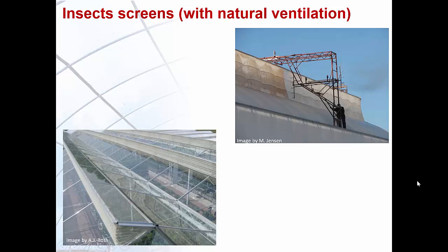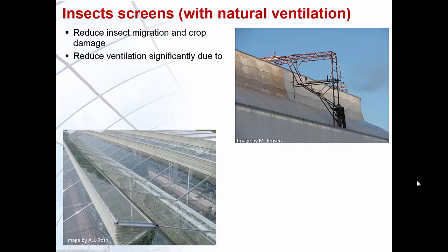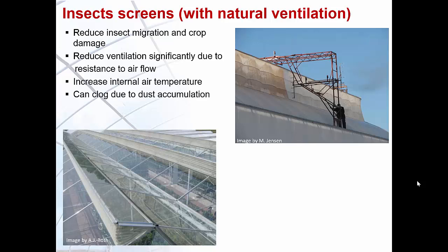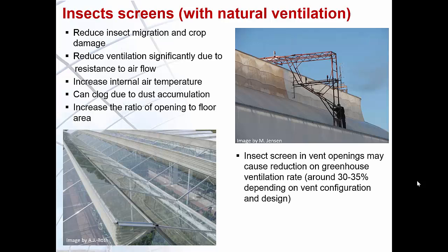Insect screens are commonly used with naturally ventilated greenhouses. They help reduce insect migration and crop damage. However, insect screens can significantly reduce ventilation due to resistance to airflow and also increase internal air temperatures. They can clog due to dust accumulation. Research shows that insect screens in vent openings may cause a reduction in greenhouse ventilation rate of about 30 to 35 percent, depending on ventilation configuration and design. Combined use of roof and side vents is recommended when using insect screens.